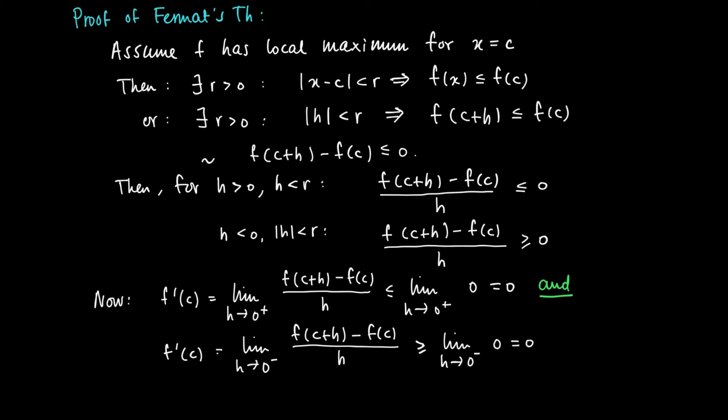So what we found is two things. First, we concluded that the derivative in c is less or equal than 0, but also on the second line that the derivative is at least 0. And of course, those two conditions can only hold if f'(c) equals 0, so the derivative should be 0.